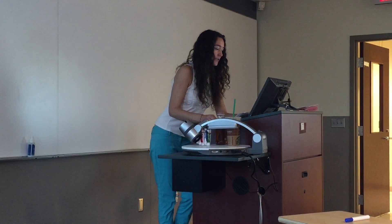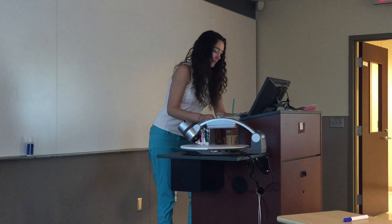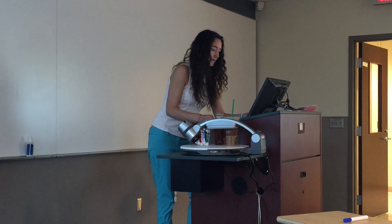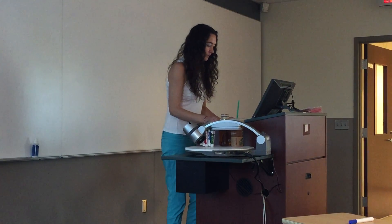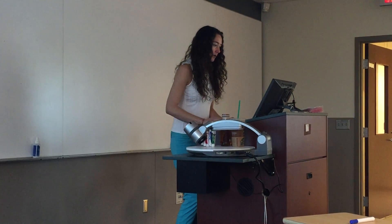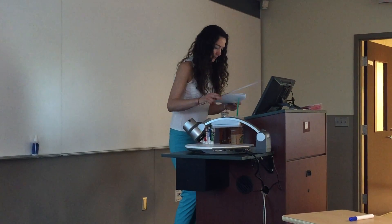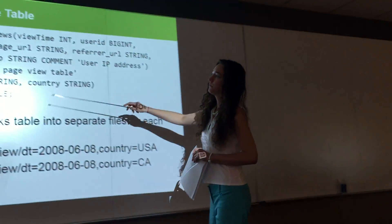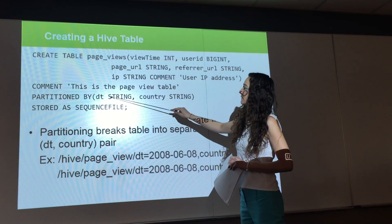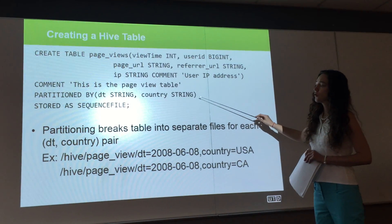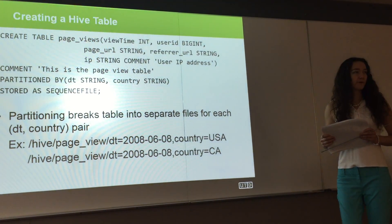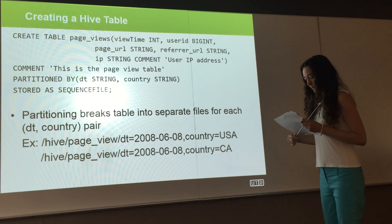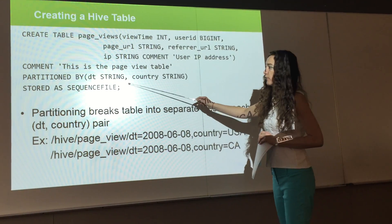Each table can be broken into several partitions. The partition determines the distribution of data within subdirectories. For example, partitioning by date string and country string means the table will have two partitions — one for the date and one for the country — resulting in two different folders.